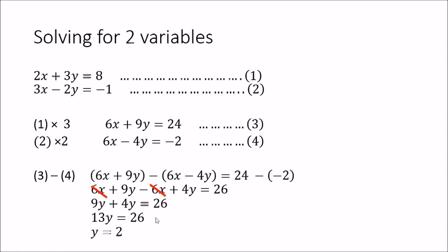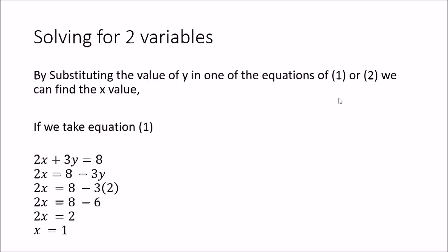Now that we have the value of y, we substitute it into one of the original equations to find x. Taking equation 1: 2x + 3y = 8, we substitute y = 2 to get 2x + 6 = 8, so 2x = 2 and x = 1. In this way we have solved both variables of the two simultaneous equations.